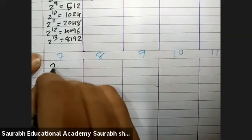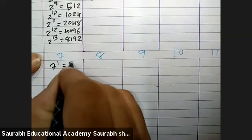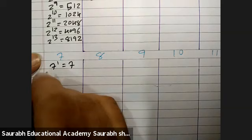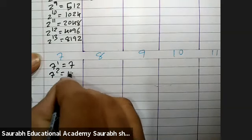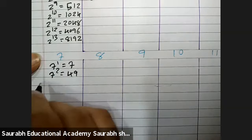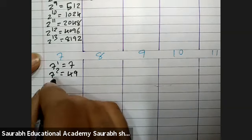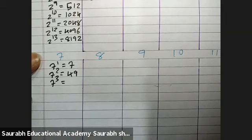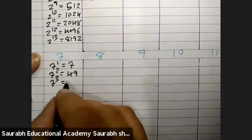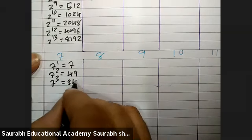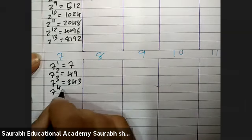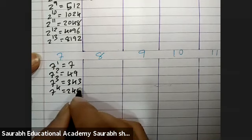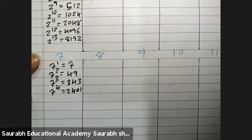Now, 7 raise to 1 is 7, 7 raise to 2 is 49, 7 raise to 3 is 343, 7 raise to 4 is 2401.